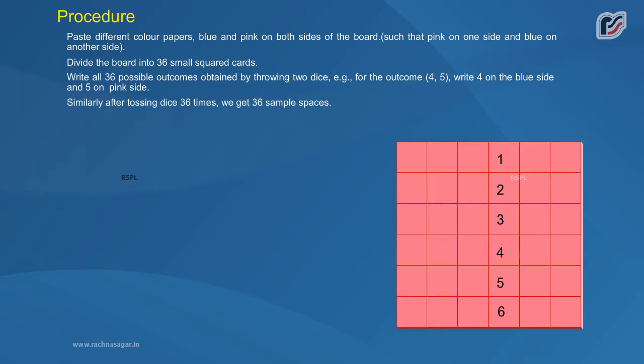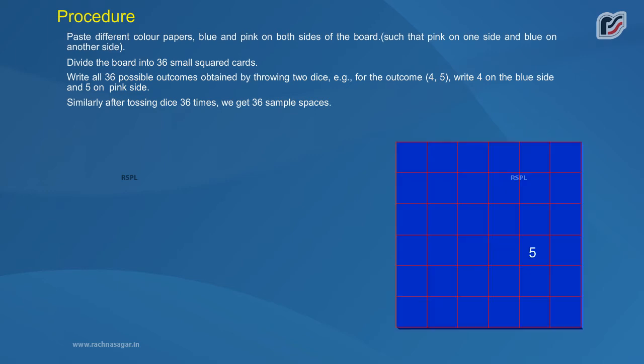Similarly, after tossing dice 36 times, we get 36 sample spaces. Cut and put all the cards into a box.